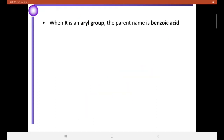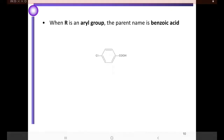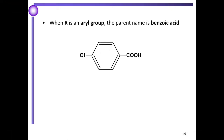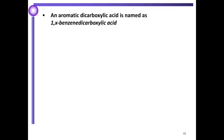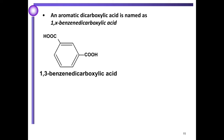When R is an aryl group, the parent name is benzoic acid. Example: chlorine attached to benzene that attaches to COOH. Numbering one, two, three, four, the name becomes 4-chlorobenzoic acid. For an aromatic dicarboxylic acid, it is named as 1,x-benzene dicarboxylic acid. We have carboxylic acid at carbon number one and number three, so the name becomes 1,3-benzene dicarboxylic acid.